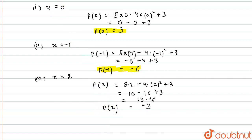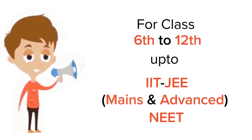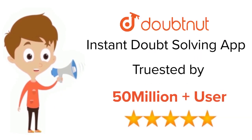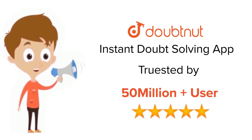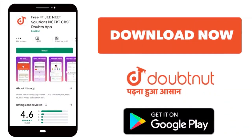The value of the given polynomial at x equals two is minus three. Thanks for watching. For class 6 to 12, IIT JEE, and NEET level — trusted by more than five crore students — download the DoubtNut app today.